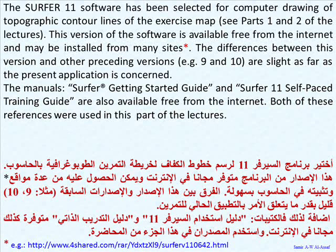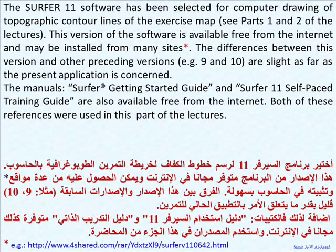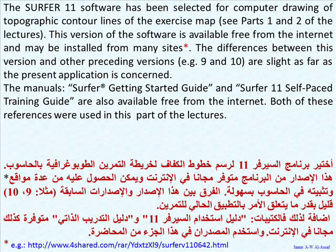This version of the software is available free from the internet and may be installed from many sites. The differences between this version and other preceding versions, for example 9 and 10, are slight as far as the present application is concerned. The manuals, Surfer Getting Started Guide and Surfer 11 Self-Paced Training Guide, are also available free from the internet. Both of these references were used in this part of the lecture.